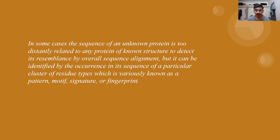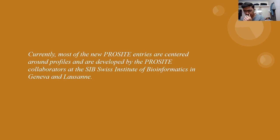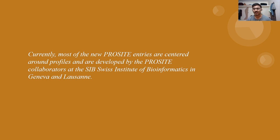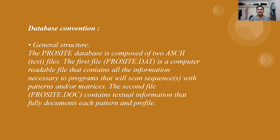There are many ways of identifying a protein — by its pattern, motif, signature, or fingerprint. Nowadays, most new PROSITE entries are made through SIB, the Swiss Institute of Bioinformatics, located in Geneva and Lausanne. Whatever particular protein is translated from a genome, the corresponding PROSITE data is submitted to SIB.